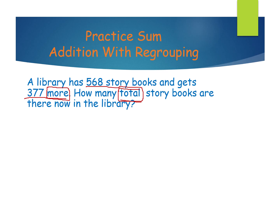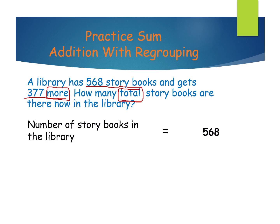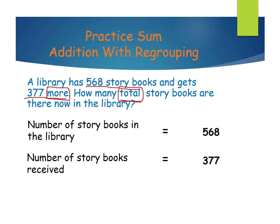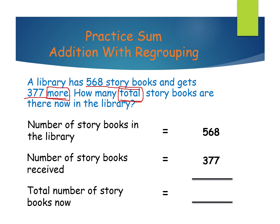Is it done, kids? I will tell how to do it. First sentence: number of storybooks in the library — how many? 568. Another sentence: number of storybooks received — 377. What are they asking? Total storybooks in the library — total number of storybooks now in the library.